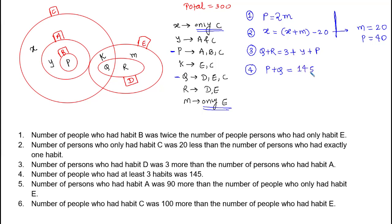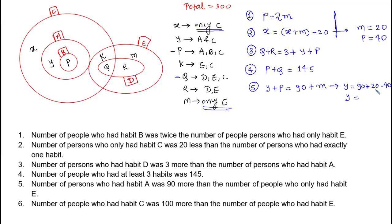Statement 5: the number of persons who had habit A — which is y + p — equals 90 more than the number having only habit E, which is m. So y + p = m + 90. From this, y = 90 + m − p = 90 + 20 − 40 = 70. So y = 70.